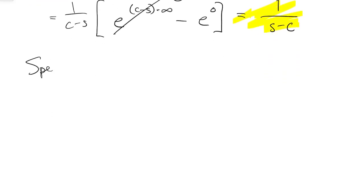An important special case is when c is equal to zero, then we're finding the transform of the constant function one, and its transform is one over s.